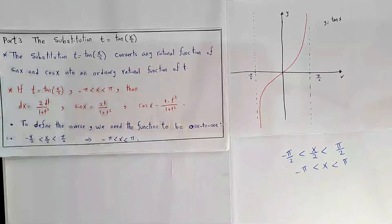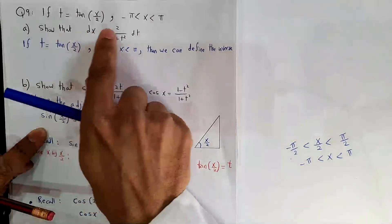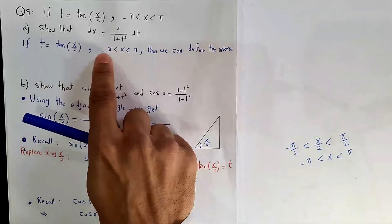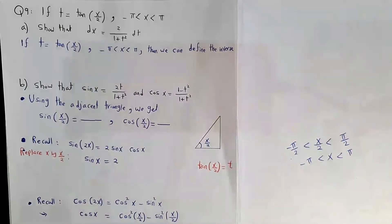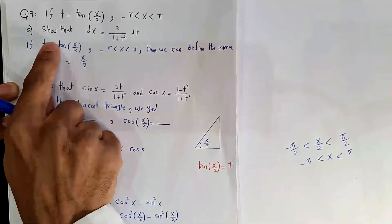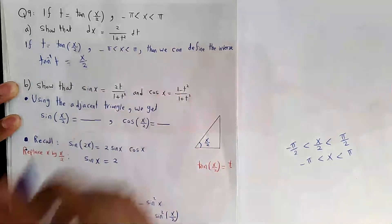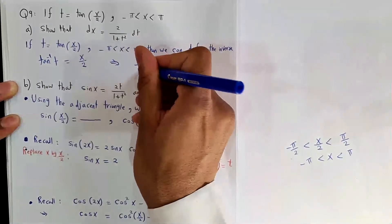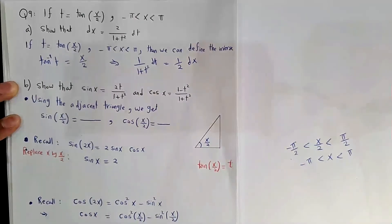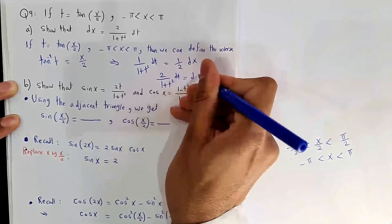Question 9, part a: if t = tan(x/2) where x ∈ (−π, π), show that dx = 2/(1+t²) dt. Since the function is one-to-one on this interval, we can write tan⁻¹(t) = x/2. Differentiating both sides: 1/(1+t²) dt = (1/2) dx. Multiplying both sides by 2 gives dx = 2/(1+t²) dt, which is the required formula.